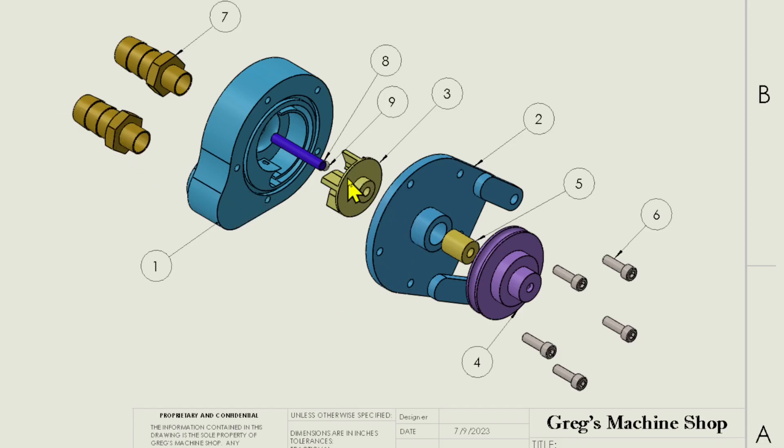The impeller spins on an eighth inch shaft, which passes through a brass bushing, which is loctited into the water pump bracket here, which mounts to the engine.